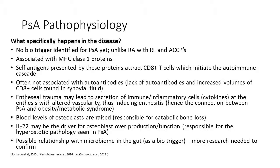Enthesial trauma may lead to secretion of immune and inflammatory cells such as cytokines at the enthesis with altered vascularity, thus inducing enthesitis. This explains the connection between psoriatic arthritis, obesity, and metabolic syndrome, which cause biomechanical stressors at the enthesis — particularly around the Achilles tendon, where truncal obesity shifts the centre of mass forward — and is why we often see enthesitis around the Achilles tendon and retrocalcaneal bursa in this condition.